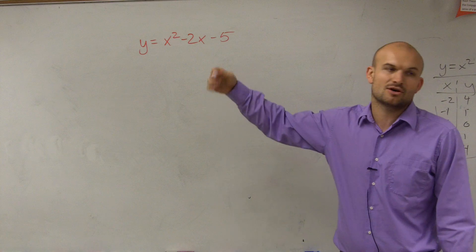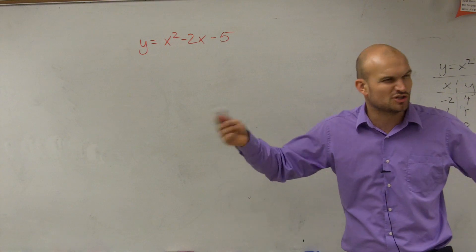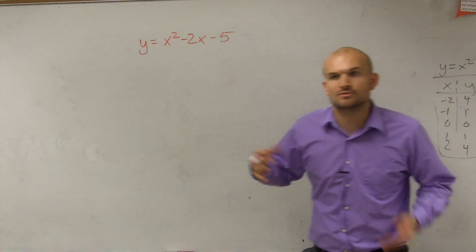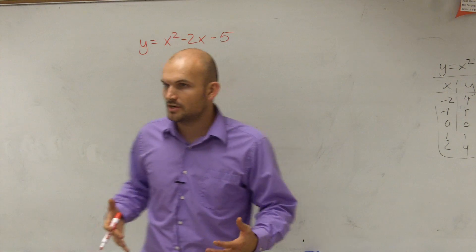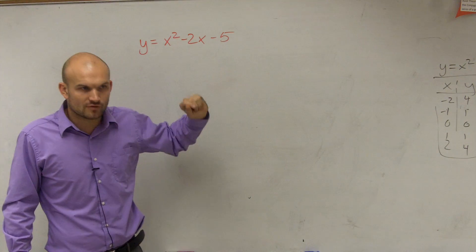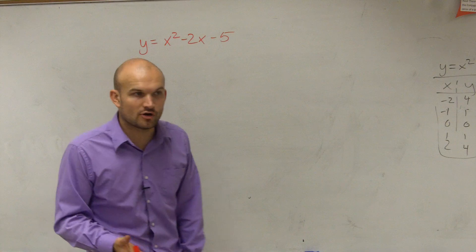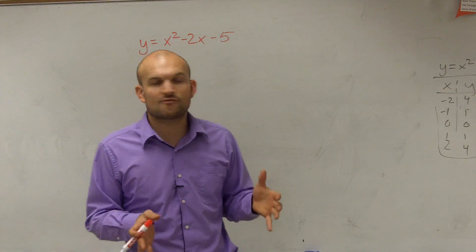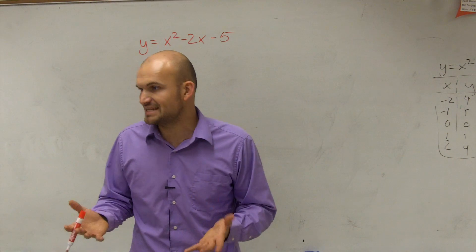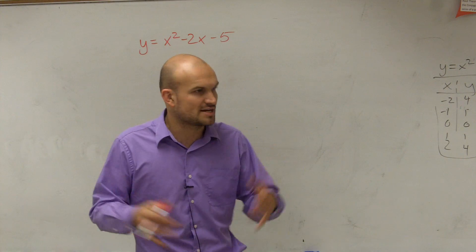Find the axis of symmetry, find the vertex, plot the points, and do all that other kind of stuff. However, if you kind of like what we did today and you like doing the vertex form, you can always take a graph that's in quadratic form and convert it to vertex form. Sometimes for a lot of you it's easier doing it in vertex form, because you just find the vertex and transformations.